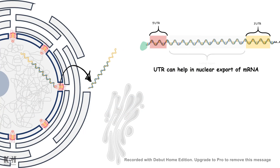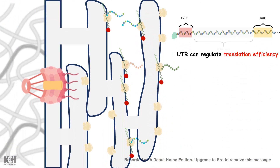First, these untranslated regions — both 5' and 3' — can bind to several proteins which aid the nuclear export of the mRNA. The mRNA can only be translated once it is out of the nucleus, and several UTR-binding proteins help facilitate this export process.